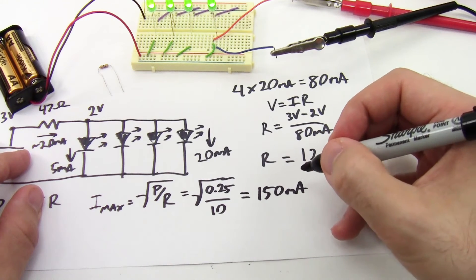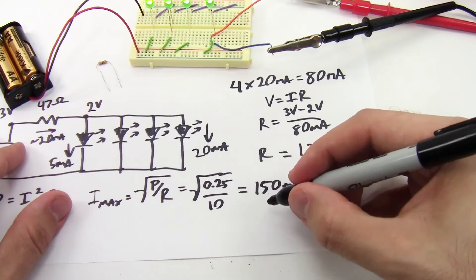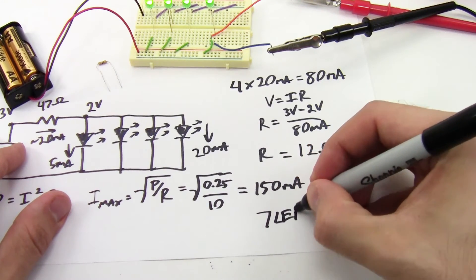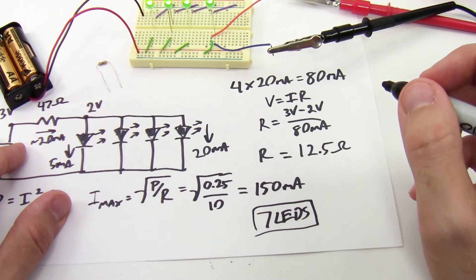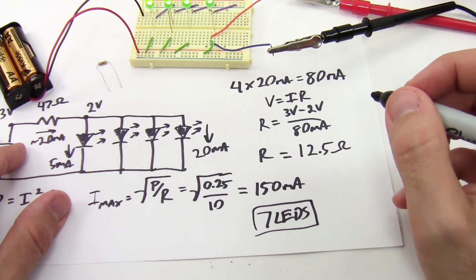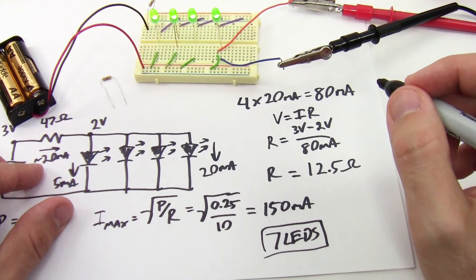If I have 20 milliamps per LED, that's only going to give me a maximum of about seven LEDs that I can add in parallel before I exceed the power rating of the resistor. So if you need more LEDs than that, it's a good idea to give each LED its own individual resistor in series.